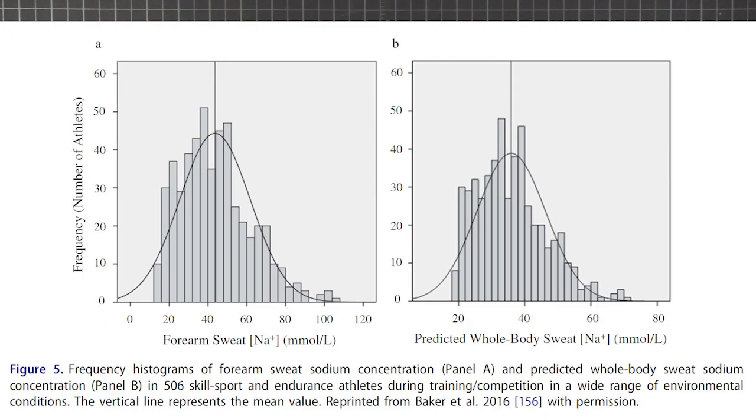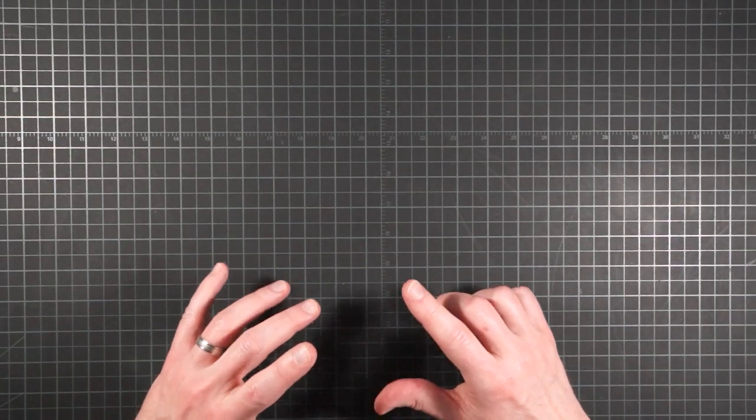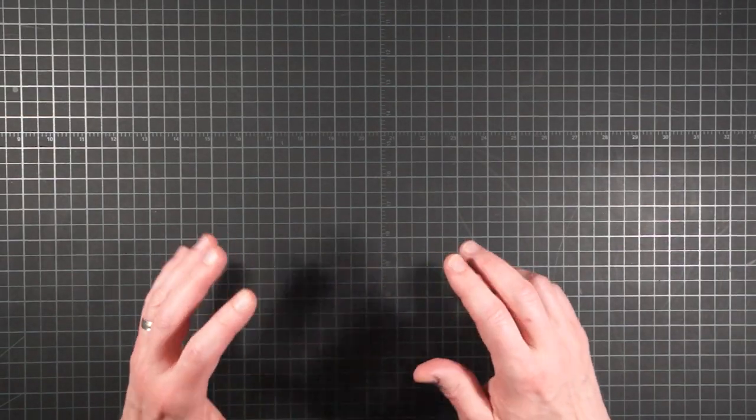Recall this histogram from part four on the variation in individual sweat sodium concentrations. It's a bell curve where most people do tend to cluster around the mean. But at the edges, you can see how some people have sweat that's more than three times as salty as others. And some of that is due to genetic differences, but a good portion of it can have to do with acclimatization.